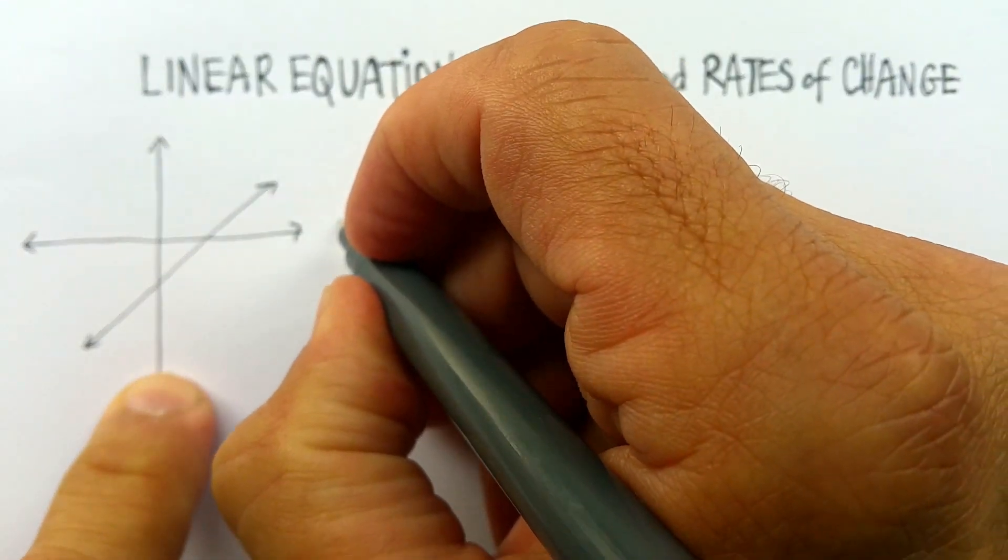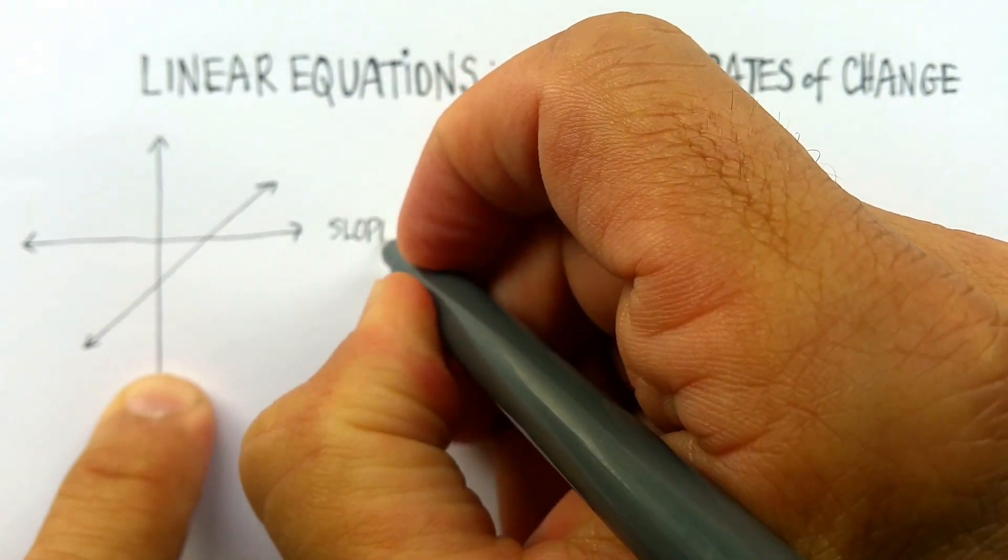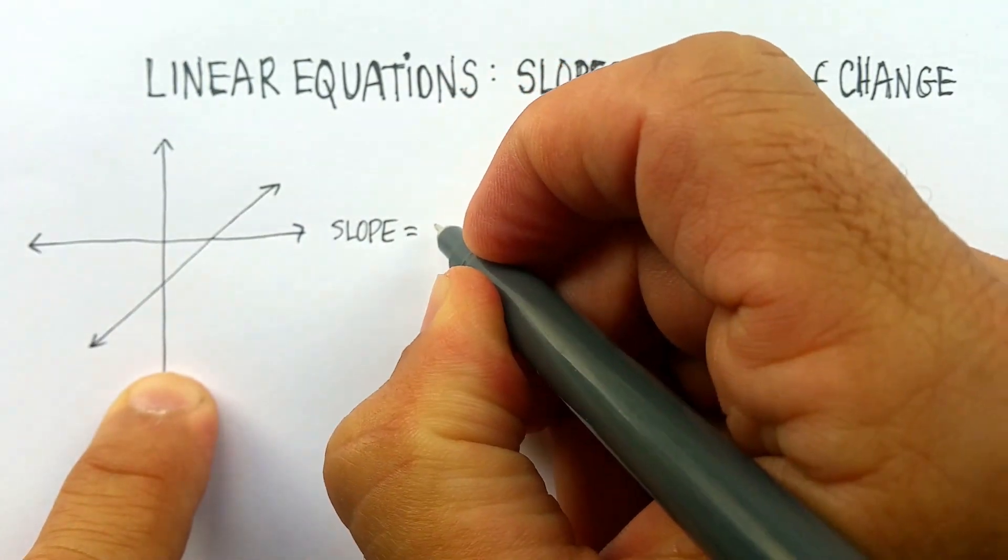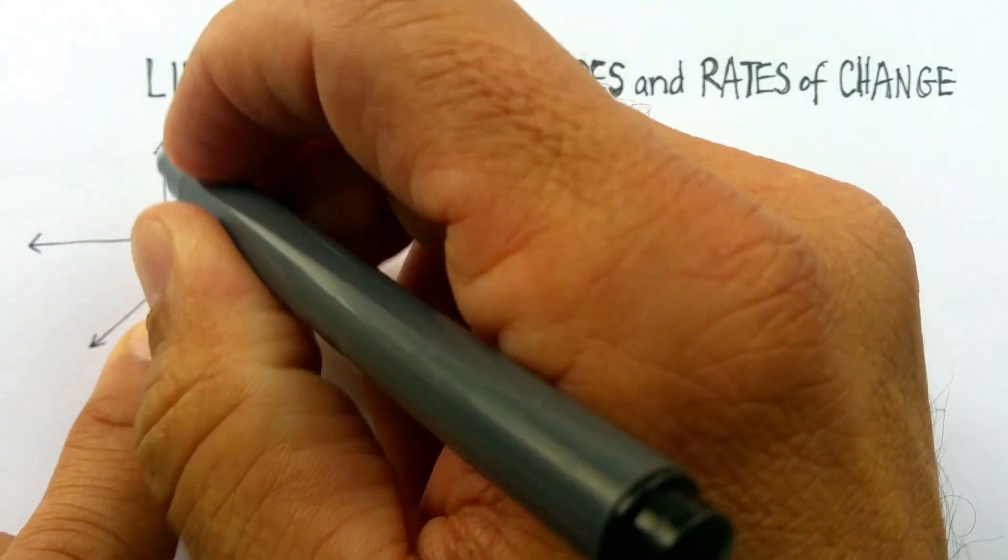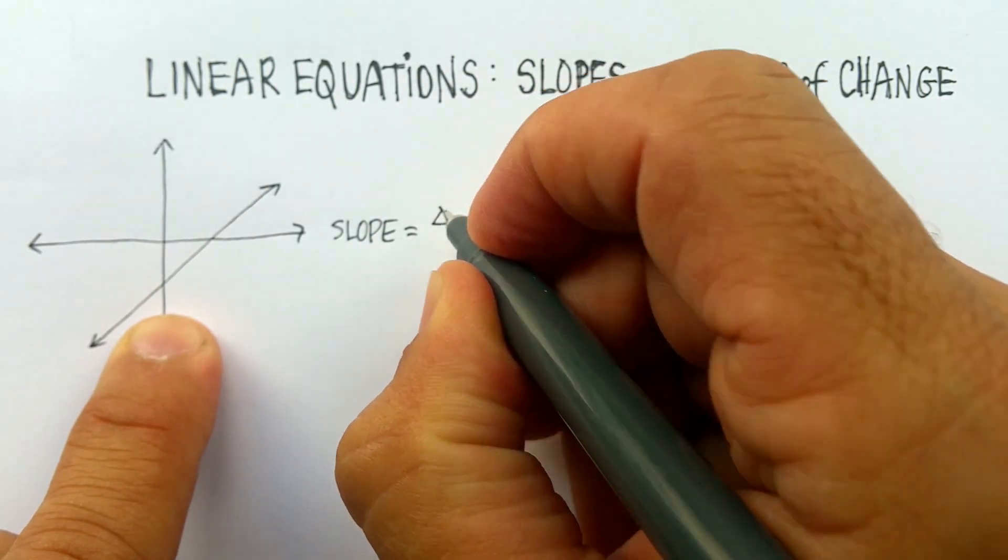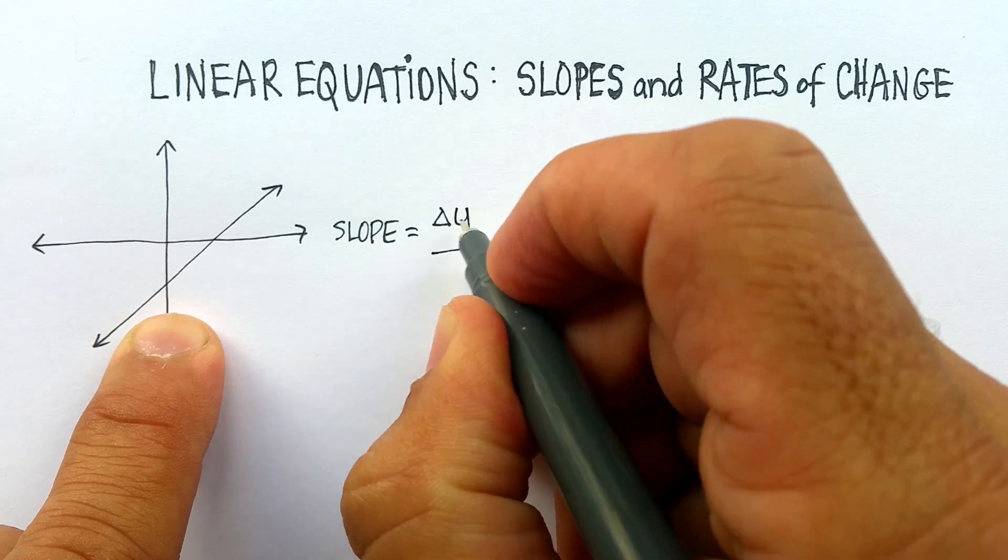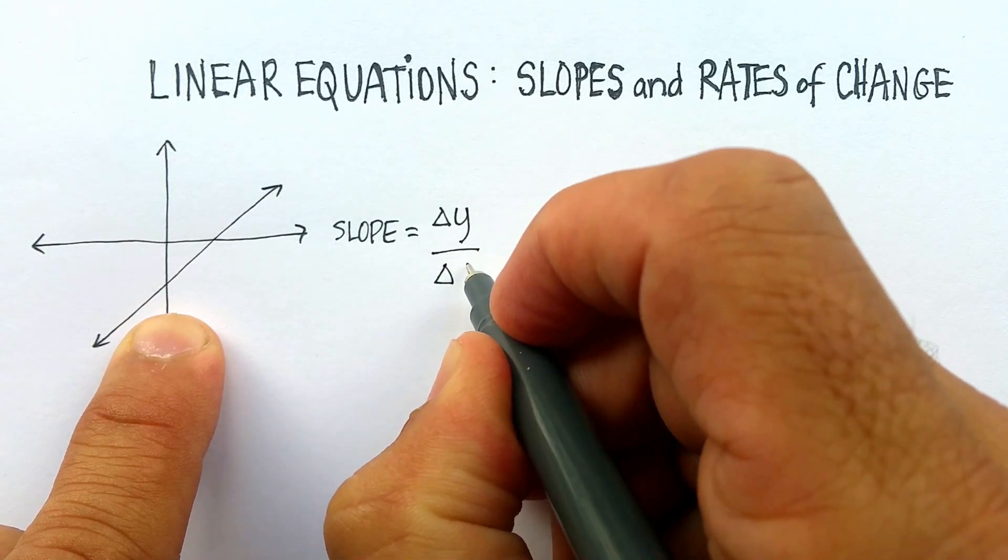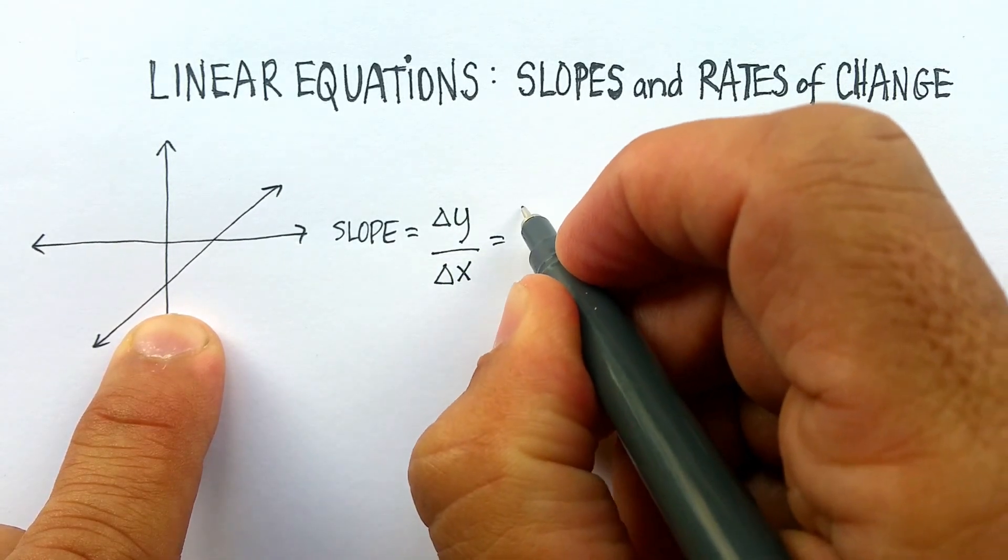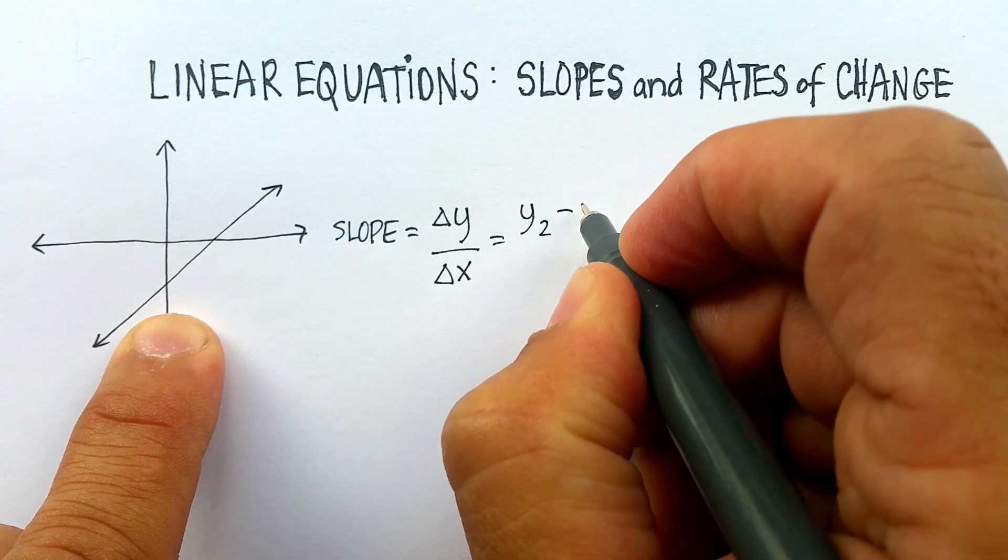And what we defined as slope, again quick review, slope is equal to the difference in the y-axis. So we designate that by putting that little delta, which means difference. Difference in y over the difference in x.